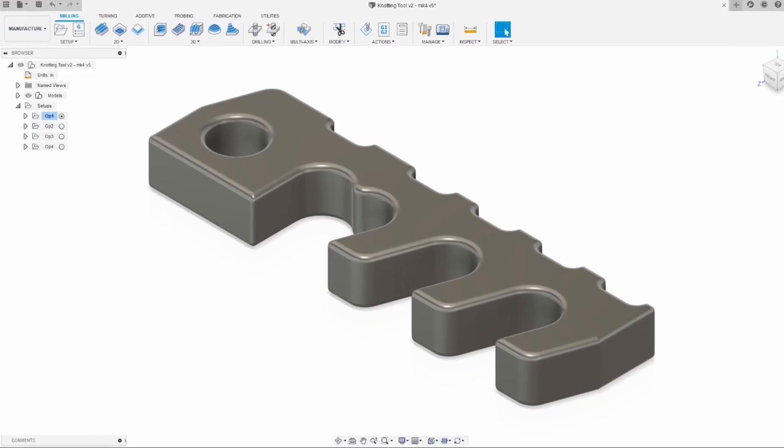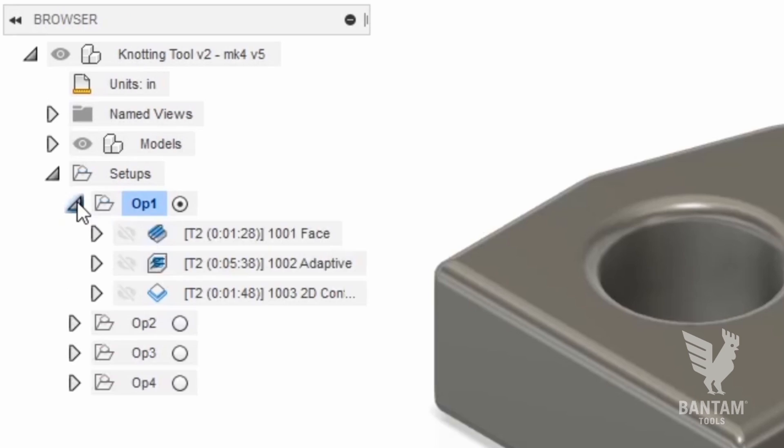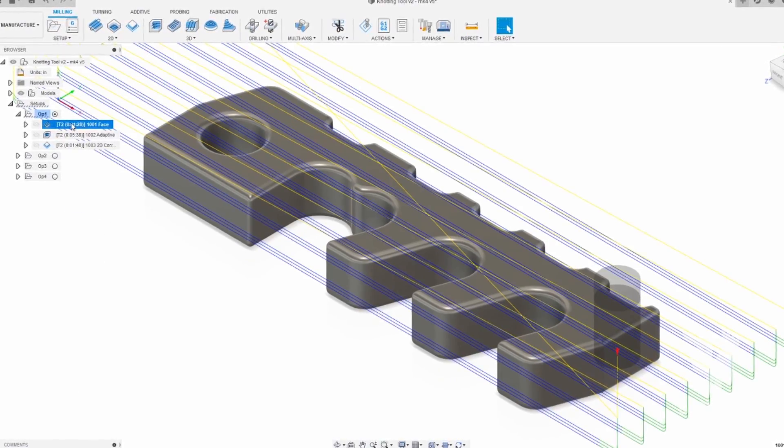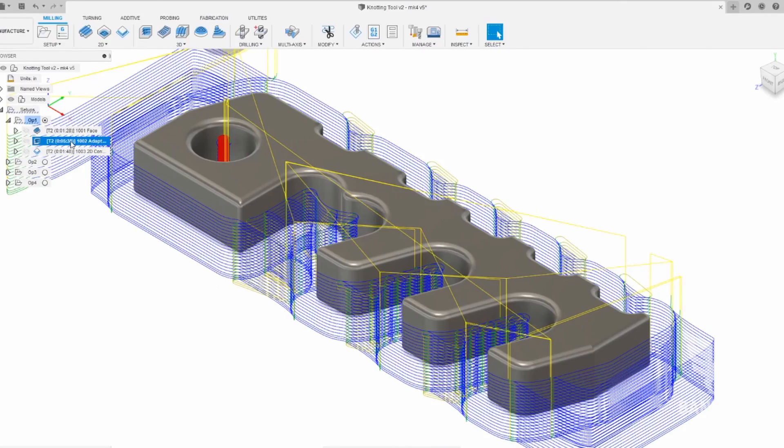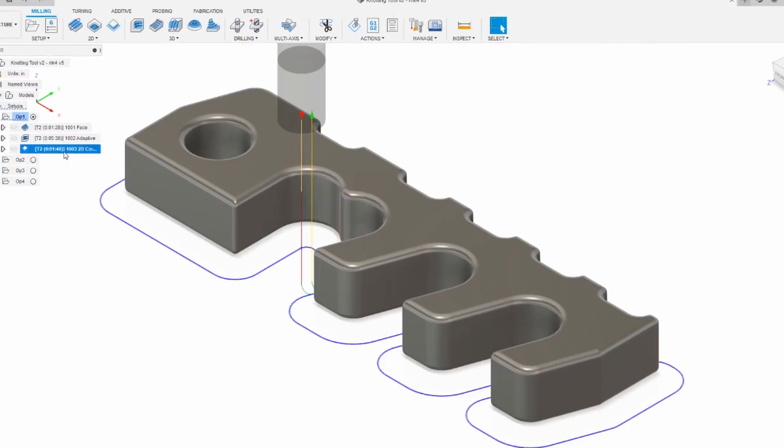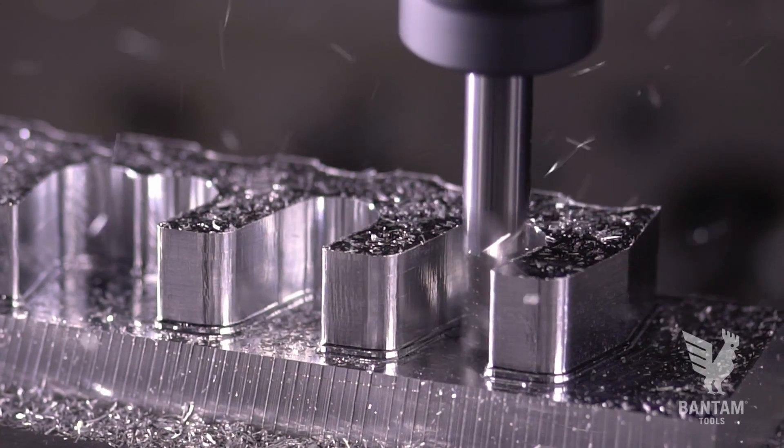Let's briefly review the Fusion 360 file for this project. We'll break it down into four operations. In the first operation, we'll face down the stock on the top of our model, then run an adaptive clearing pass to rough out the general shape, and finally clean up the outer walls using a contour pass.